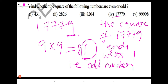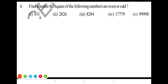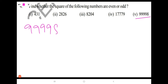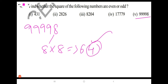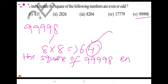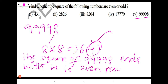Coming to the 5th bit: 99998. So 8 into 8 gives 64. But you need to take only 4. So the square of 99998 ends with 4, which is an even number.